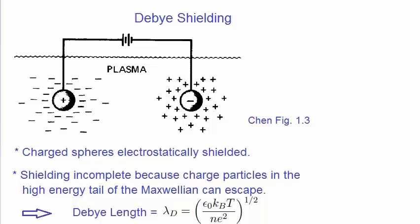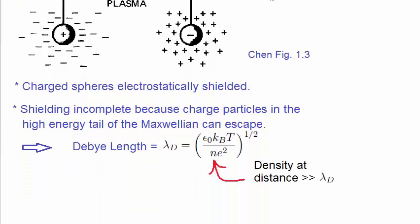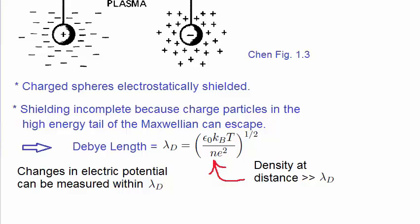But we do introduce a length in the plasma whereby most of the charge is contained. This is known as the Debye length. The symbols in this expression are as usual, but it's important to comment on one particular parameter, the density. This is the density at a much greater distance than the Debye length, because the density within the Debye length does change. So within a Debye length, changes in the electric potential can be measured. It doesn't mean that changes in the potential outside the Debye length can't be measured, because as we said, the shielding is not complete. But the changes are much smaller. Quite often we do treat this Debye length as a kind of a boundary, but it's not really a boundary, as we will show in later lectures when we derive the Debye length.